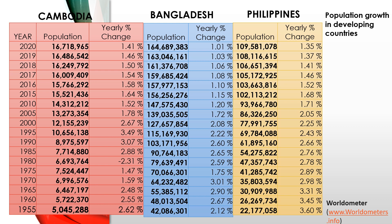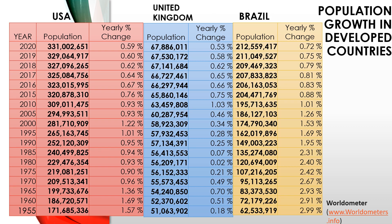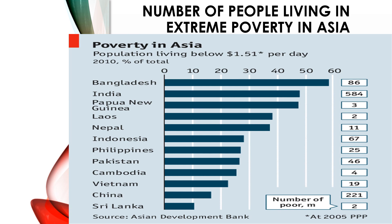Now let's look at the developed countries. For the developed countries, we will look at the USA, the United Kingdom, and Brazil to see if they also have a similar population rate. For the USA, it is 0.59% to 0.60%; for the United Kingdom, 0.5% to 0.62%; while for Brazil, it is 0.75%. You can observe that most of the people living in extreme poverty are in Asia.